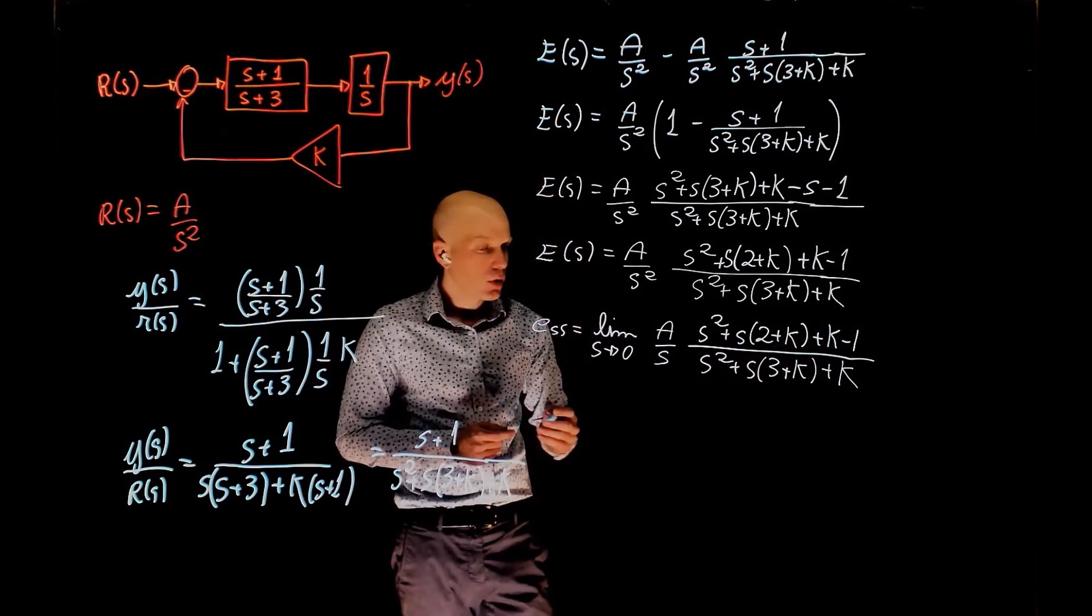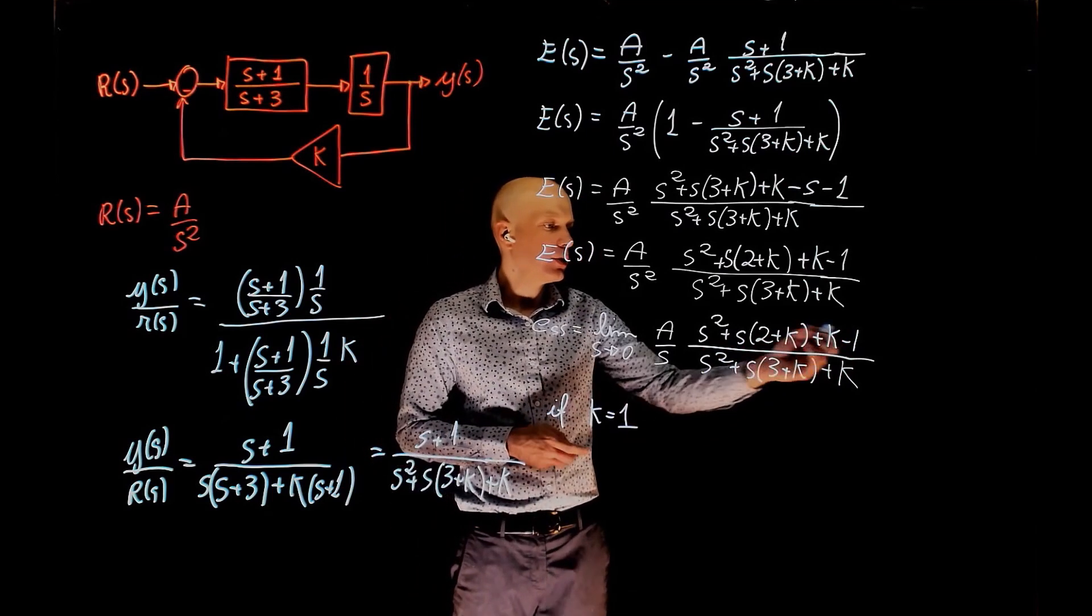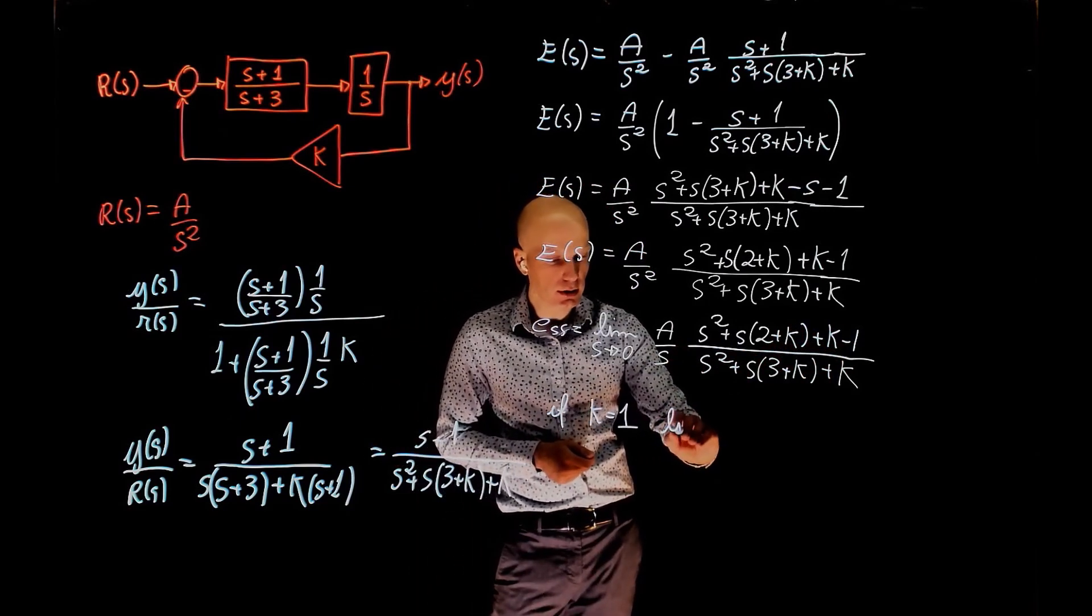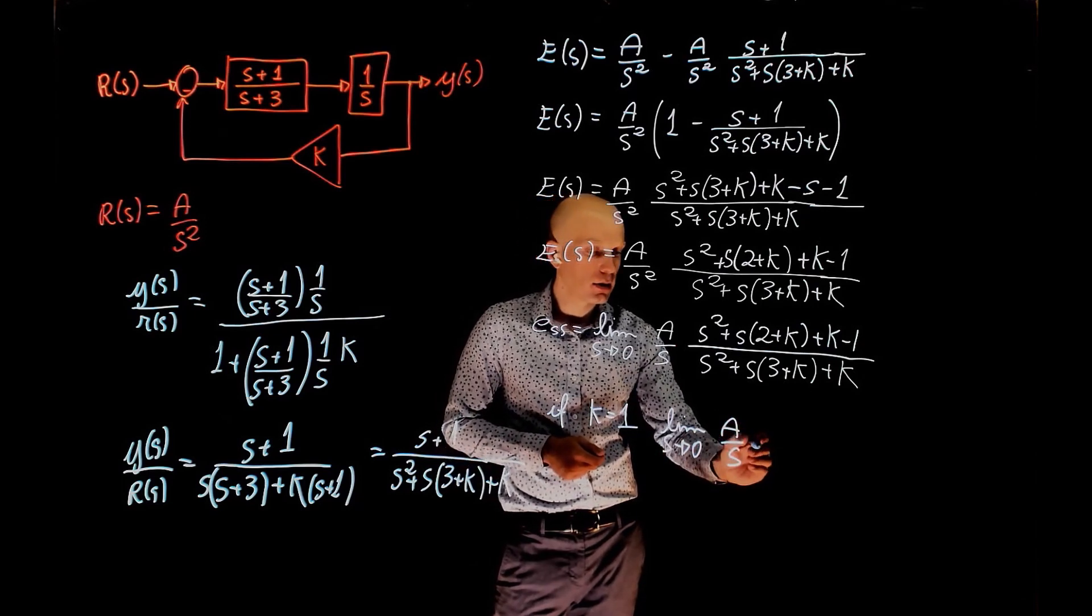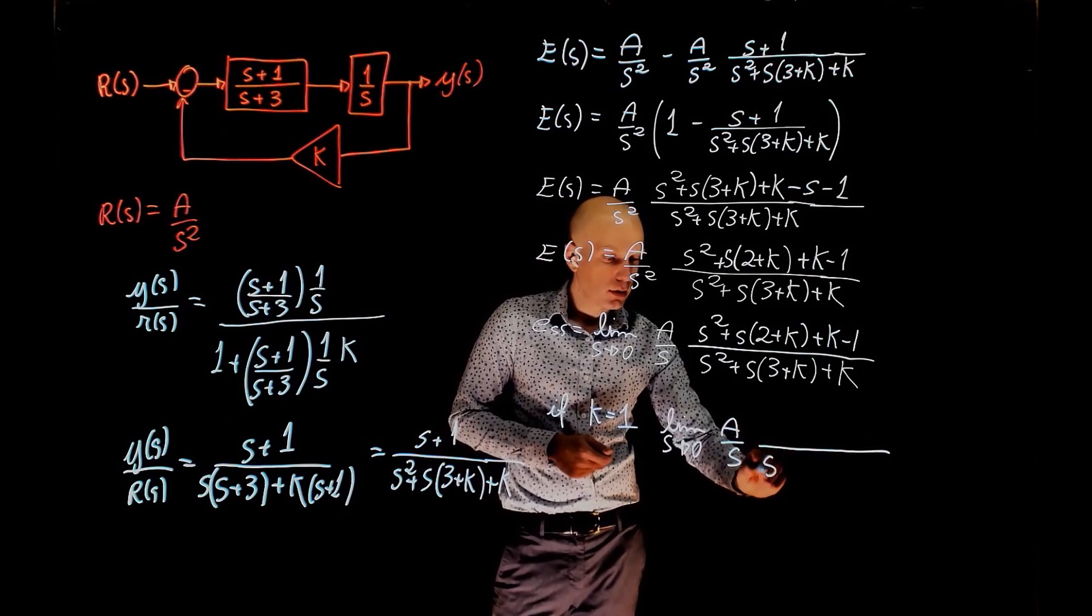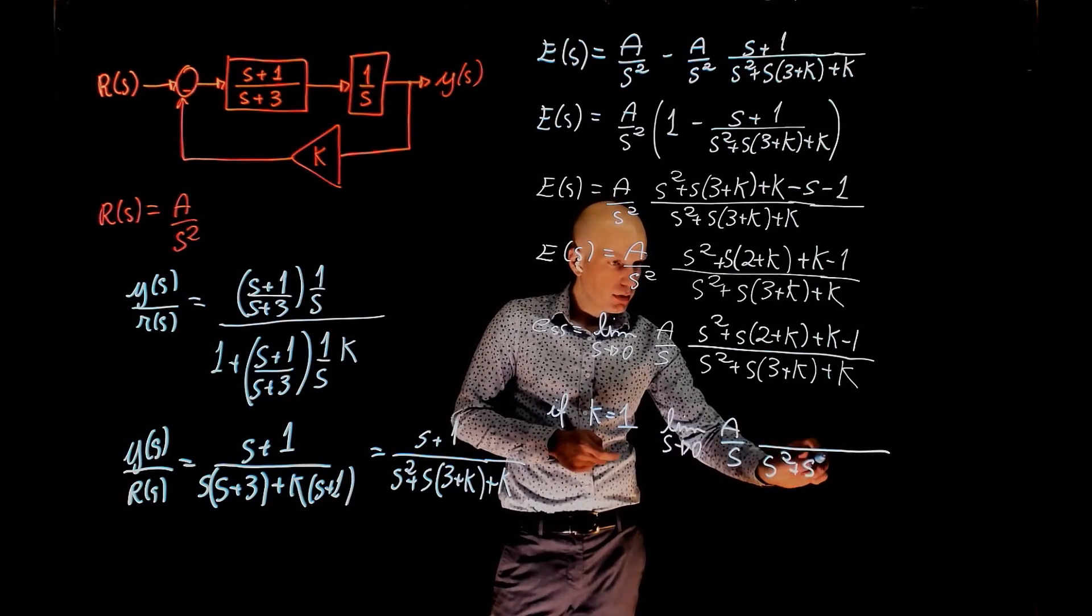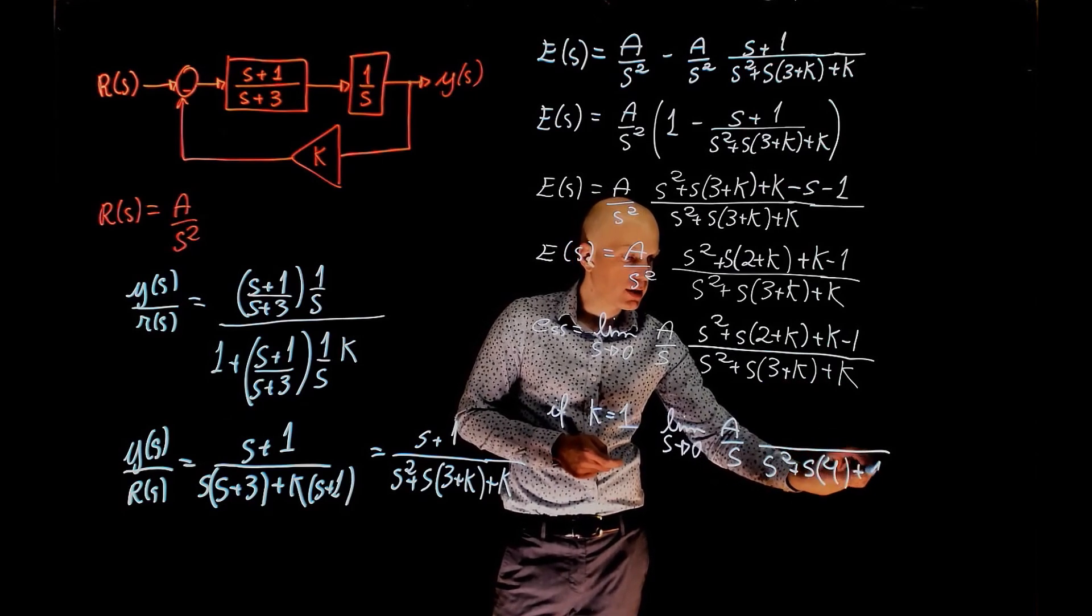So by looking at this, when k is 1, then this term here goes to 0, and you can rewrite this expression as the limit when s tends to 0 of a over s. The denominator here becomes s times 4 plus 1, k equals 1.